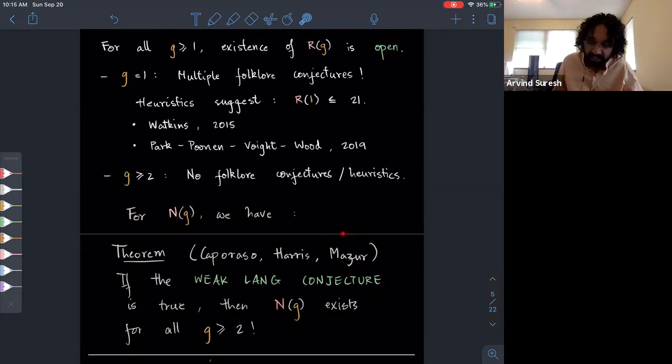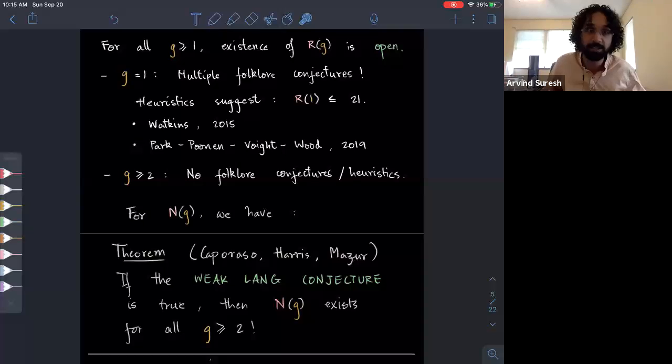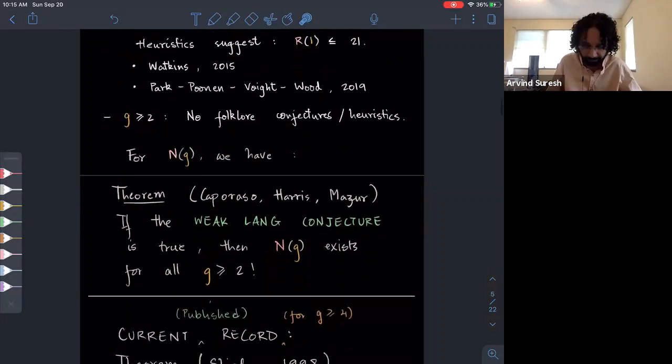For all positive genus, whether the constant R of G exists or not is open. The closest we come to knowing anything about it is in the genus one case, in case of elliptic curves, where we actually have multiple heuristics which were released within the past five years. Both these heuristics suggest that in fact, the ranks of elliptic curves over Q should be uniformly bounded by 21. For genus at least two, there's no such heuristics on the boundedness of ranks. The situations are pretty different for this constant N of G.